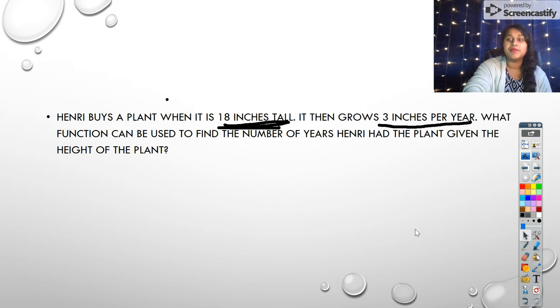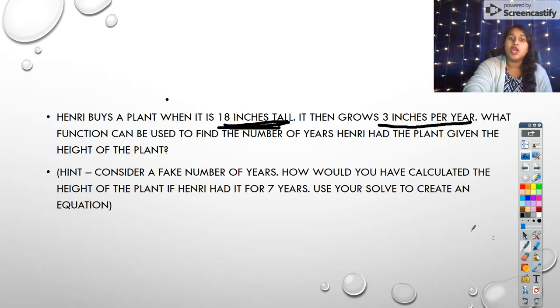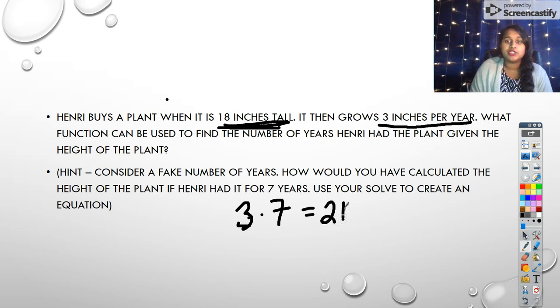And if you were struggling with this question, my hint to you is how would you have solved this? If you made up some fake number of years, how would you have solved it? So I said for 7 years. Well, what do we do for 7 years? Well, in order to figure out how many inches it grew in those 7 years, I'm going to do 3 times 7, aren't I? Isn't that kind of the normal procedure for figuring this out? If you were like, how many inches would it have been? Well, that's 21 inches. But that's not our end, right? It's not our end. And so we have to add in those original 18 inches.